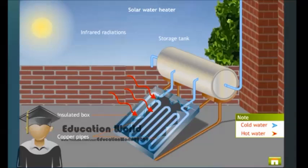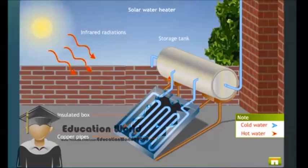As a result, water inside the copper pipes gets heated up and becomes lighter. The heavier cold water from the storage tank, which is at a relatively lower temperature, flows down into the copper pipes. And the hot water, that is lighter, flows into the storage tank.